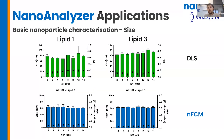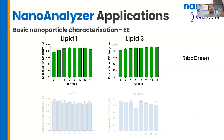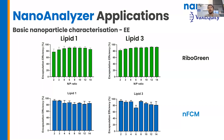When we look at the ribo-green encapsulation efficiency, you can see that across the different MP ratios in both lipids, we don't really see a trend relating to the MP ratio. This is backed up by the nanoflow cytometry data. Across everything, we get really nice high encapsulation efficiency, as you'd expect in this kind of microfluidic formulation, but nothing relating to a trend.